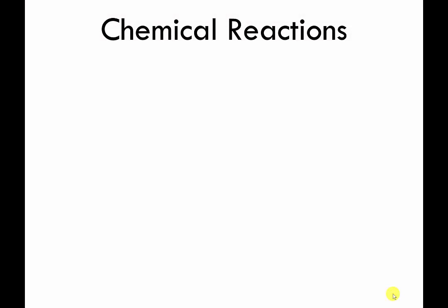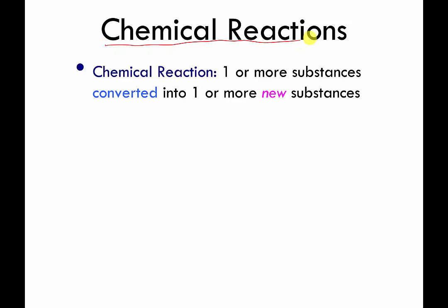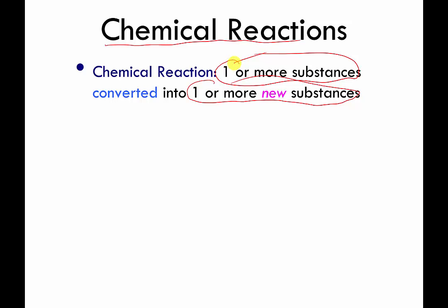This unit deals with how to describe chemical reactions to other people. A chemical reaction is when you take one or more materials and convert them into one or more new materials. In other words, you take some chemical and convert it into something new — it could be more than one new thing, but it's got to be at least one.